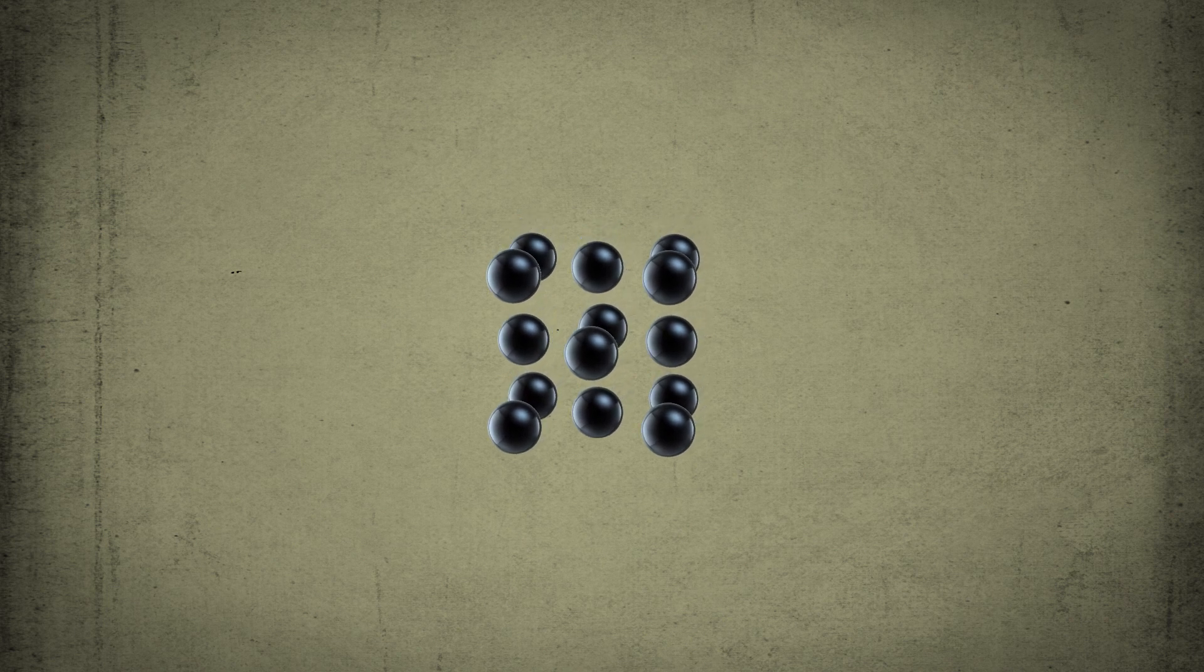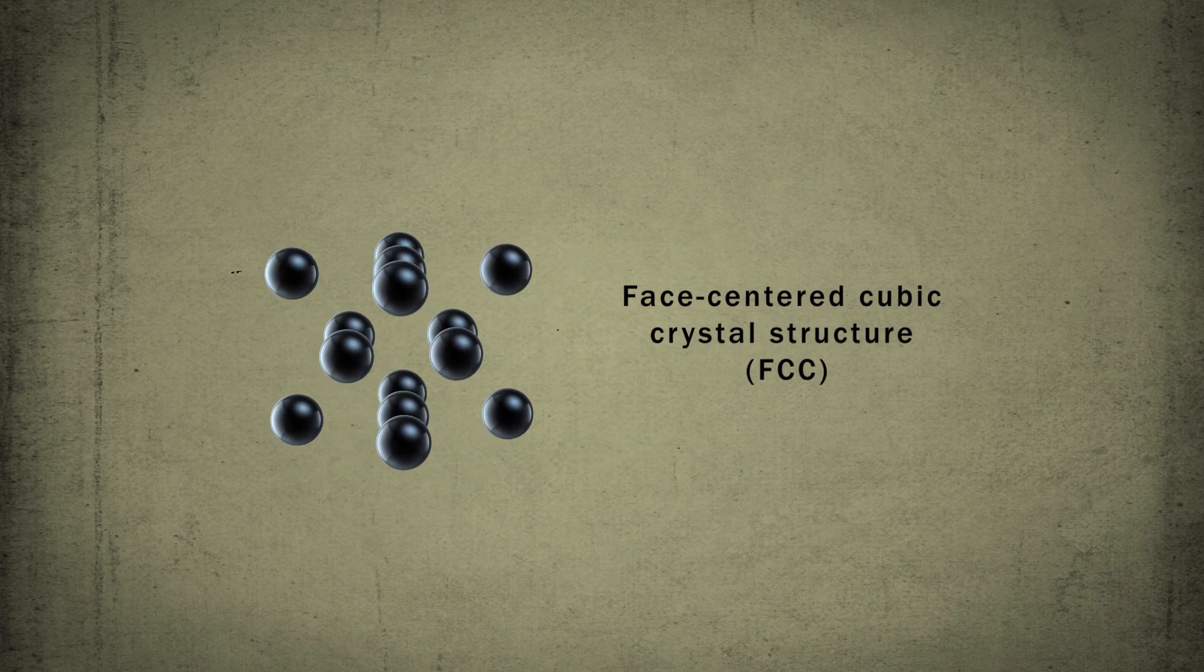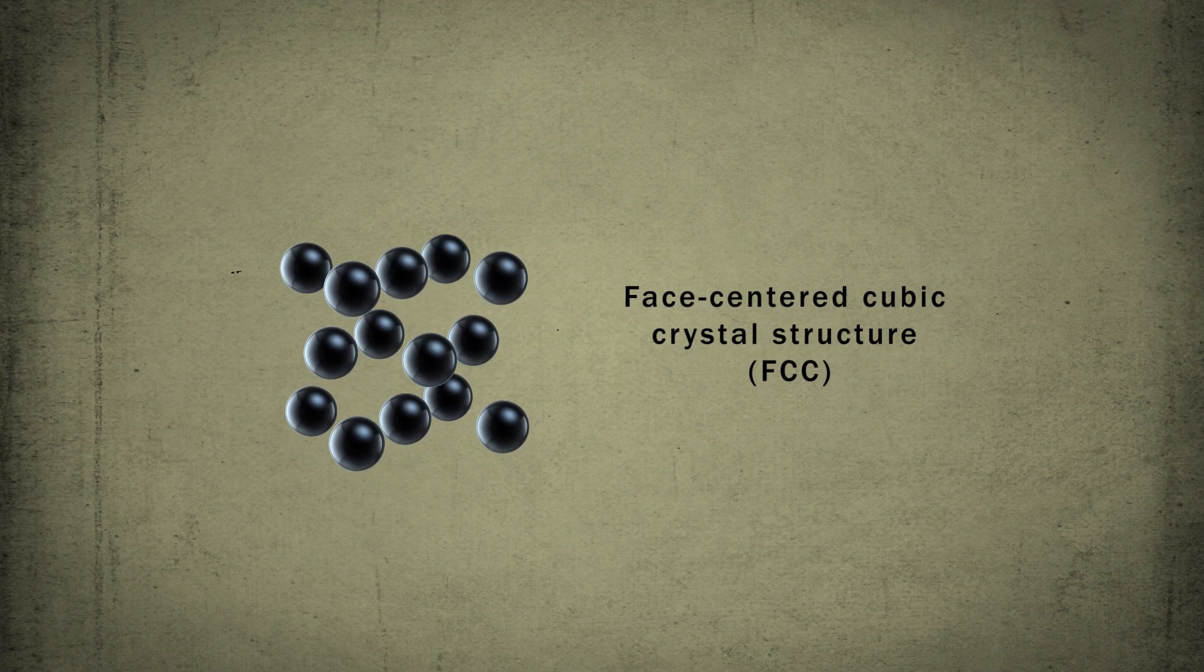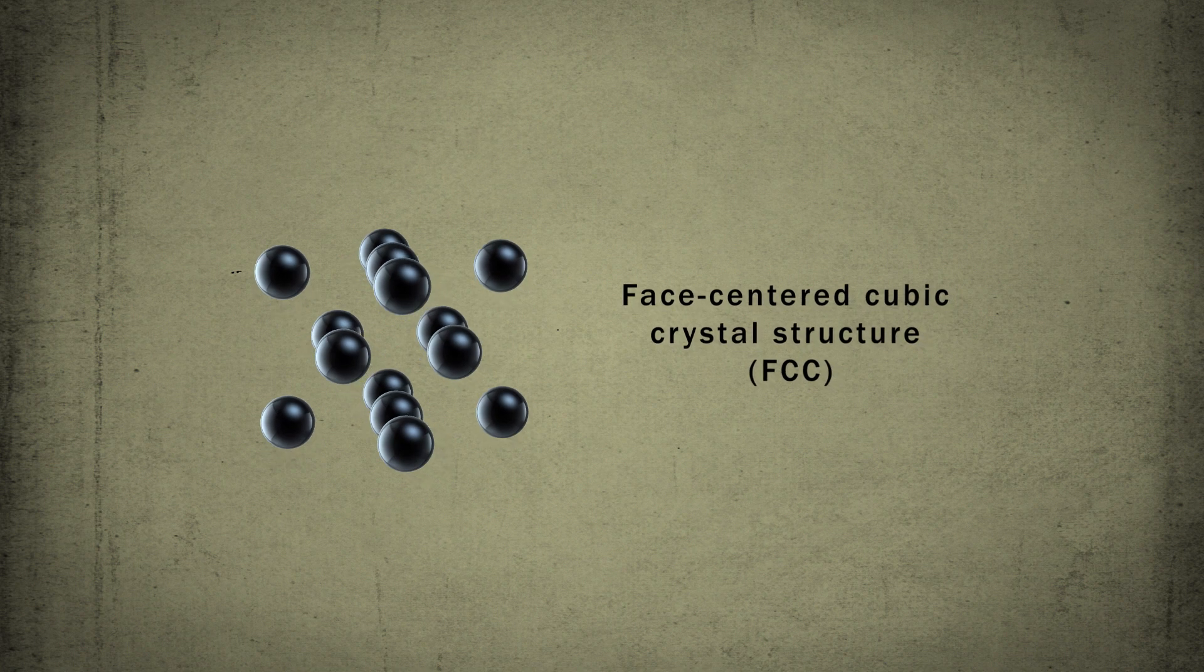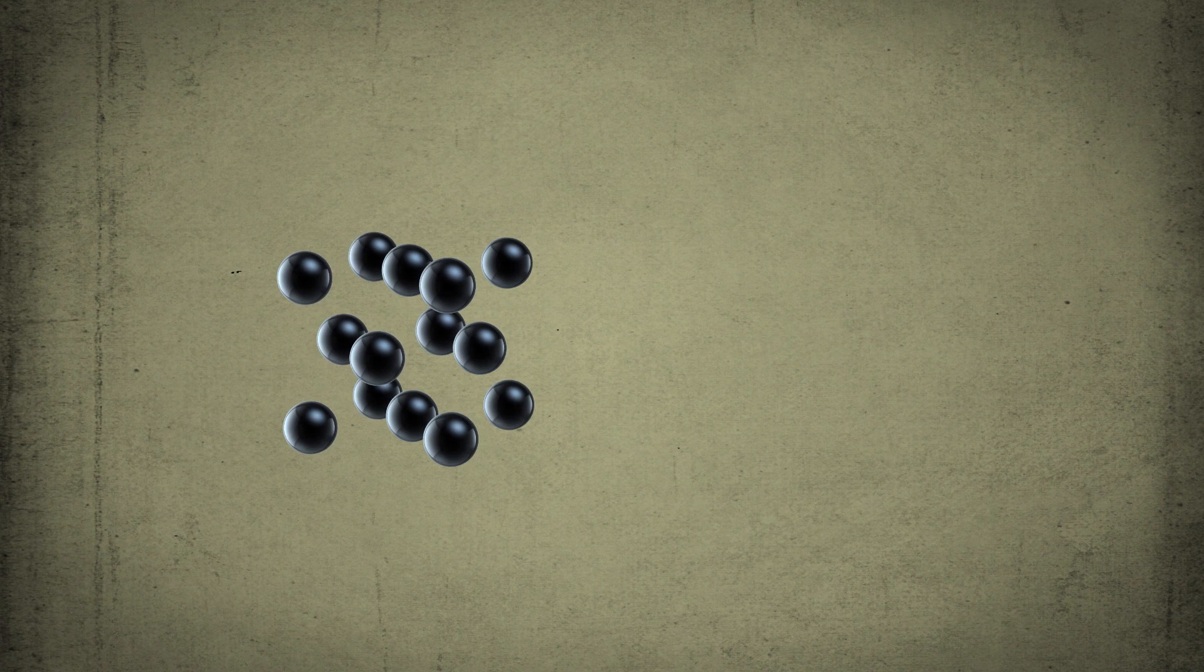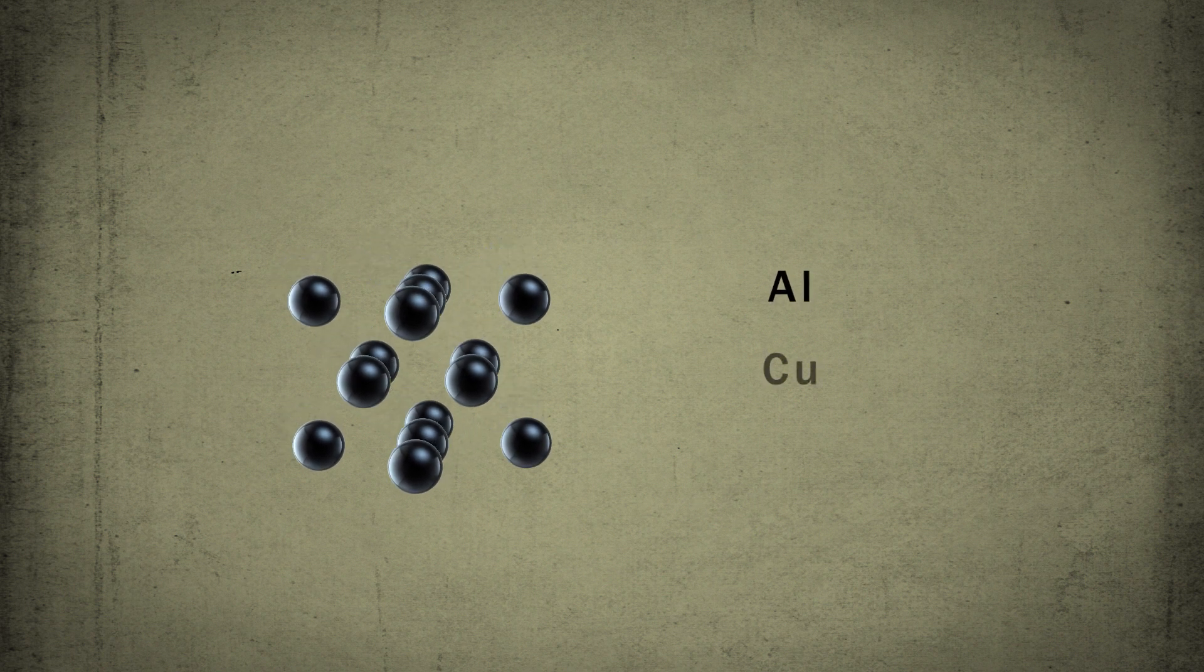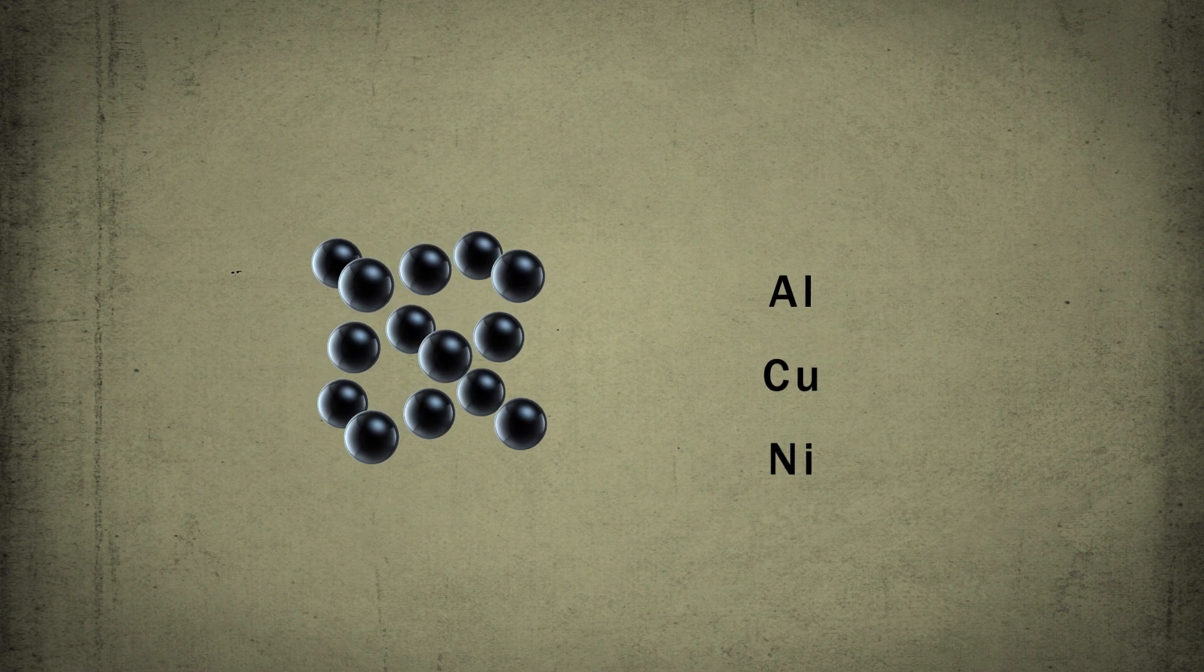Another metallic crystal structure is called a face-centered cubic crystal structure, briefly FCC. It has a unit cell with atoms located at each of the corners and the centers of all the cube faces. Aluminum, copper, and nickel exhibit a face-centered cubic crystal structure.